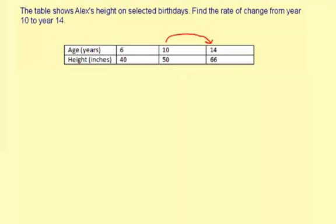So the rate of change is going to be the amount of height that changed divided by the number of years that changed. So it's going to be the height divided by years.